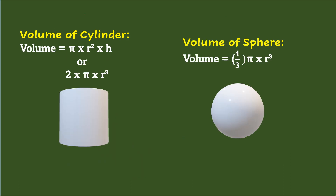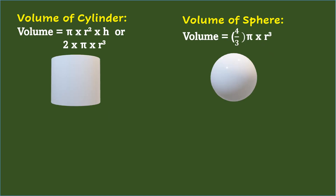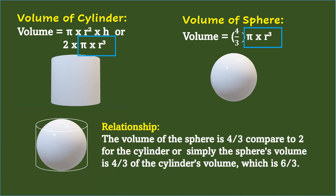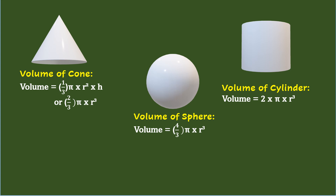For the volume of the Cylinder, it is Volume equals Pi times Radius squared times Height, or 2 times Pi times Radius cubed. And for the Sphere, it is Volume equals four-thirds times Pi times Radius cubed. The sphere's coefficient is four-thirds compared to 2 for the cylinder, so the Sphere's volume is four-thirds of the Cylinder's volume, which is six-thirds.